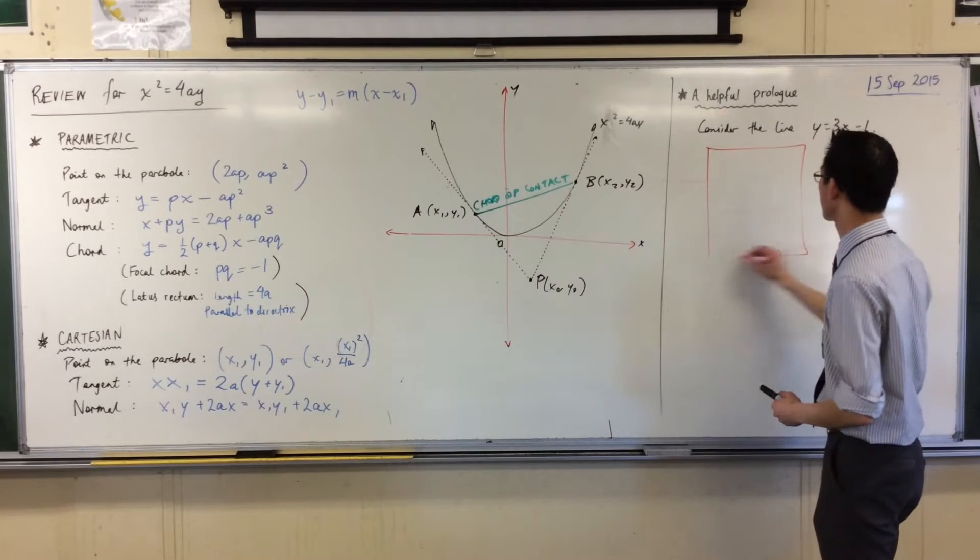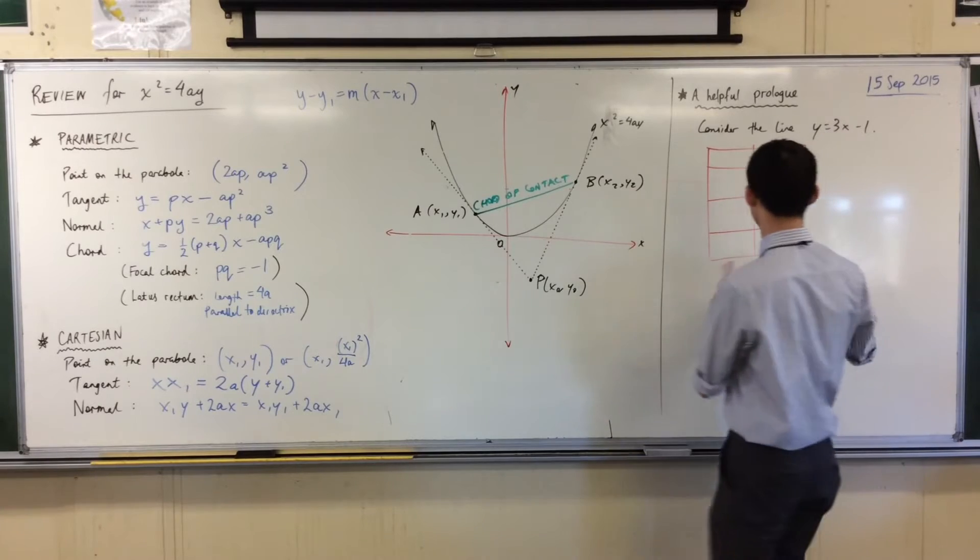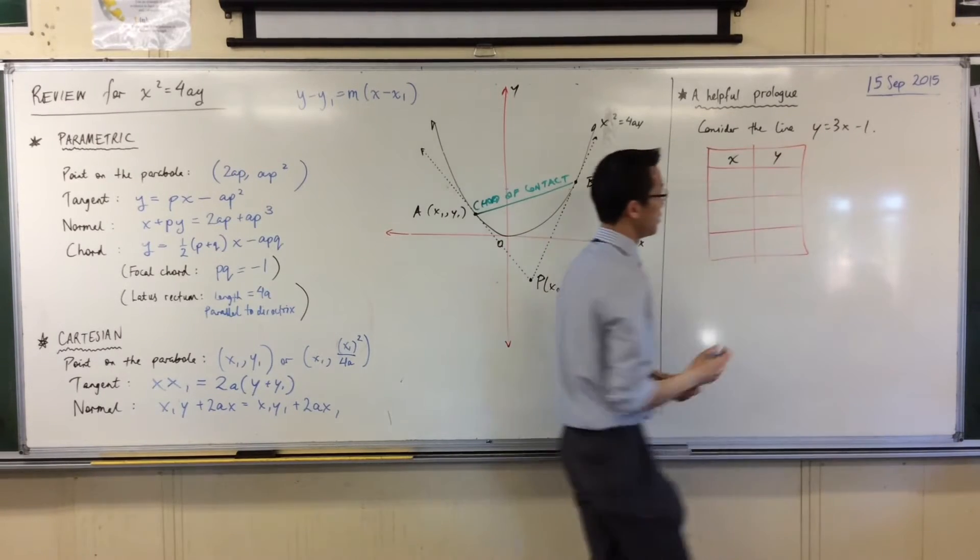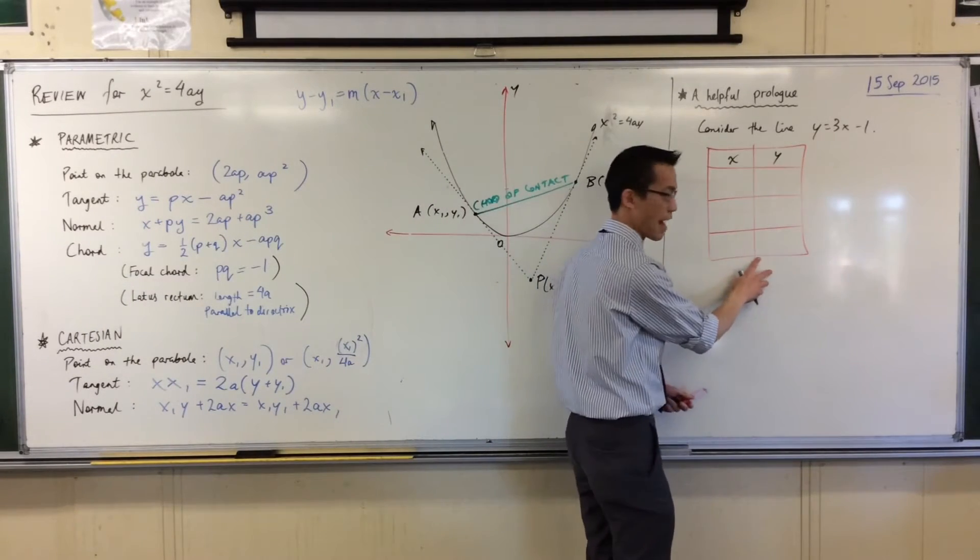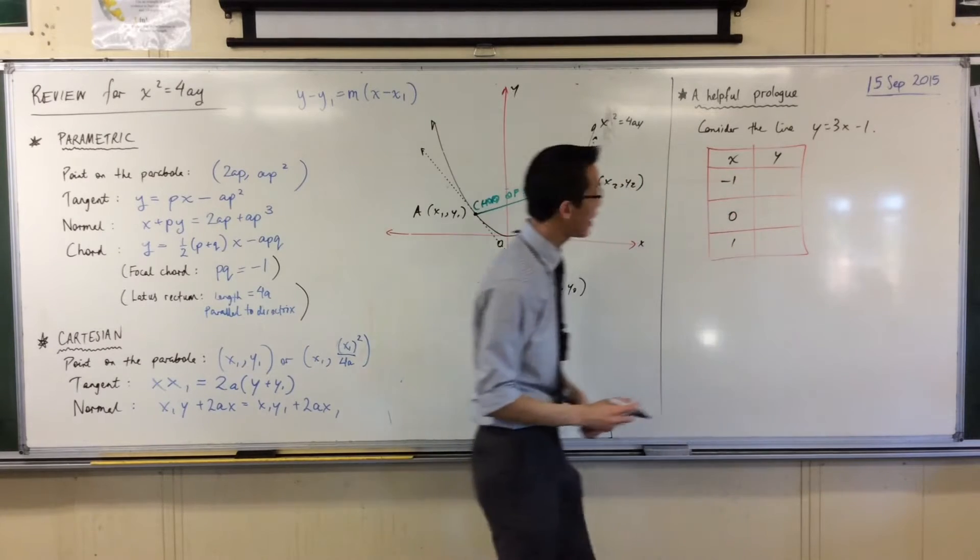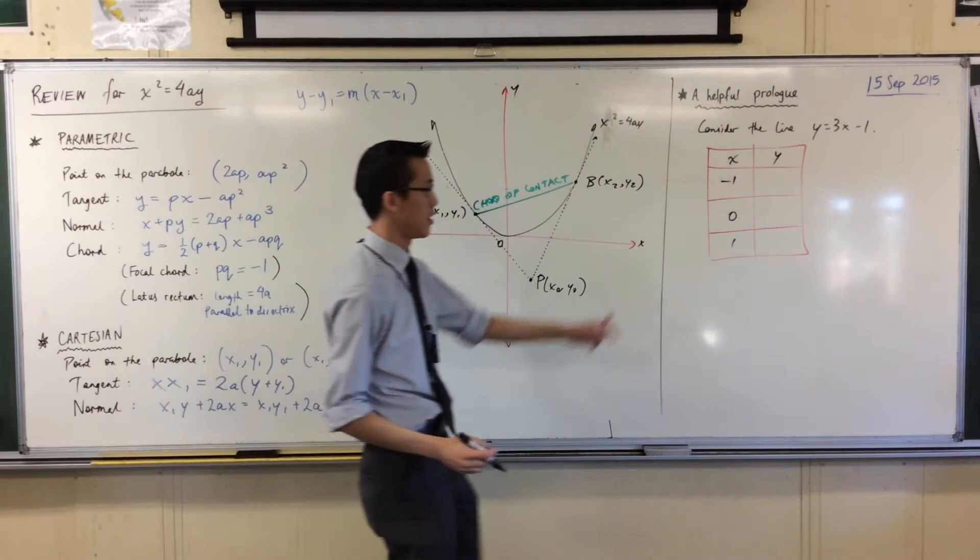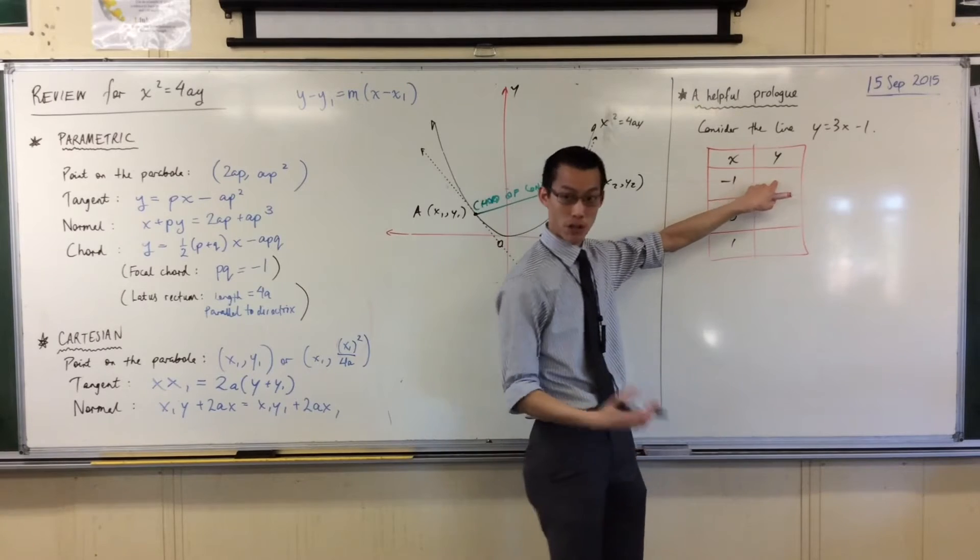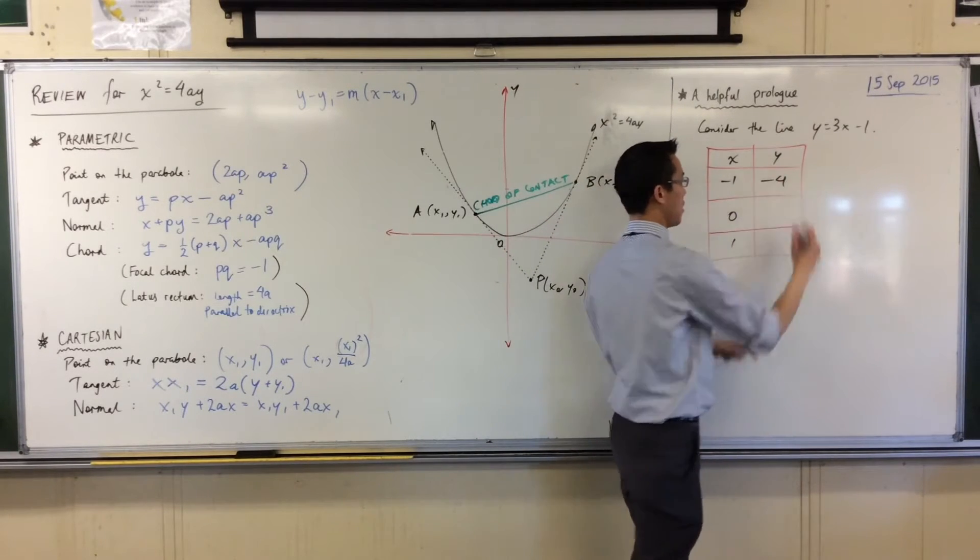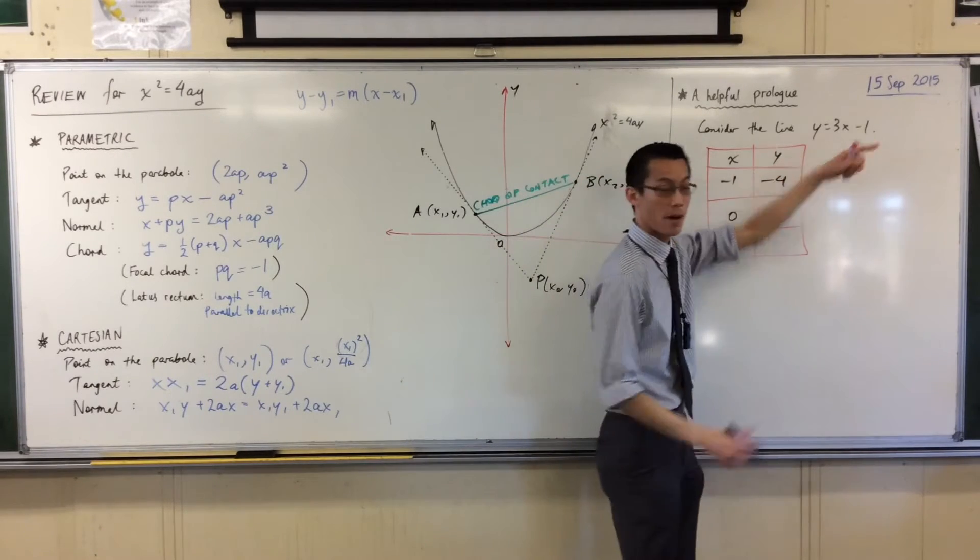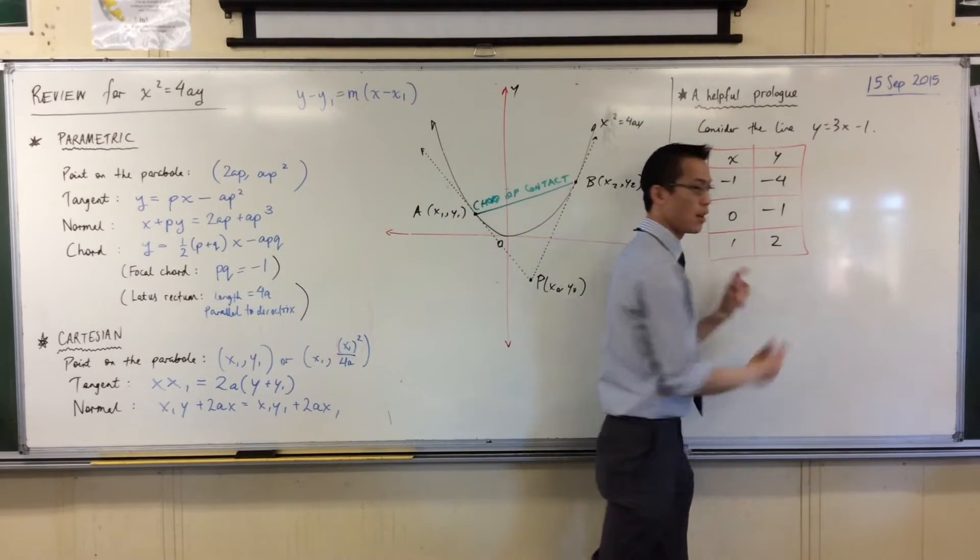Let's do 3 values. So for instance, a pretty simple set of values might be like maybe negative 1, 0, and 1. That'll give us some certainty there. So if I have those x values, let's just quickly mentally compute. If x equals negative 1, when you input that, what do you get for y? Minus 4. Because you've got minus 3 minus 1. When x is 0, you just have minus 1. And when x equals 1, you've got 3 take away 1, which is 2.